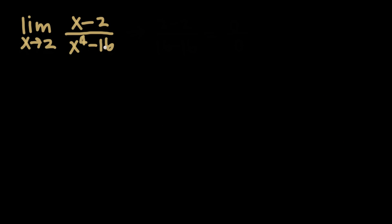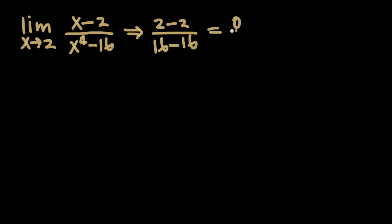Now let's do one more example where we do use L'Hôpital's rule. Remember, we need to make sure the limit of this quotient is in indeterminate form, so let's check. If we plug in 2 for x, we end up with 2 minus 2 in the numerator divided by 2 to the 4th — which is 16 — minus 16 in the denominator. That's going to give us 0 over 0, an indeterminate form, so we can use L'Hôpital's rule.